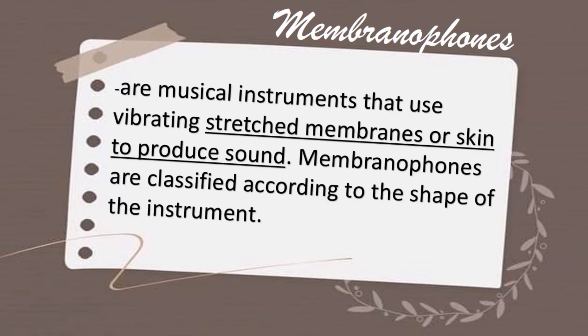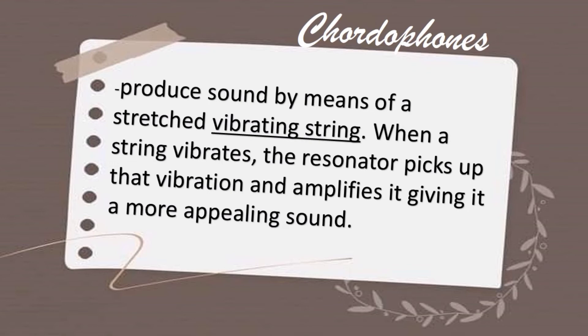The next classification is membranophones. These are musical instruments that use a vibrating stretched membrane or skin to produce a sound. Membranophones are classified according to the shape of the instrument. Remember: membranophones have a stretched membrane or skin — something being stretched on top to hit and produce sound. An example instrument for membranophones is the drum.